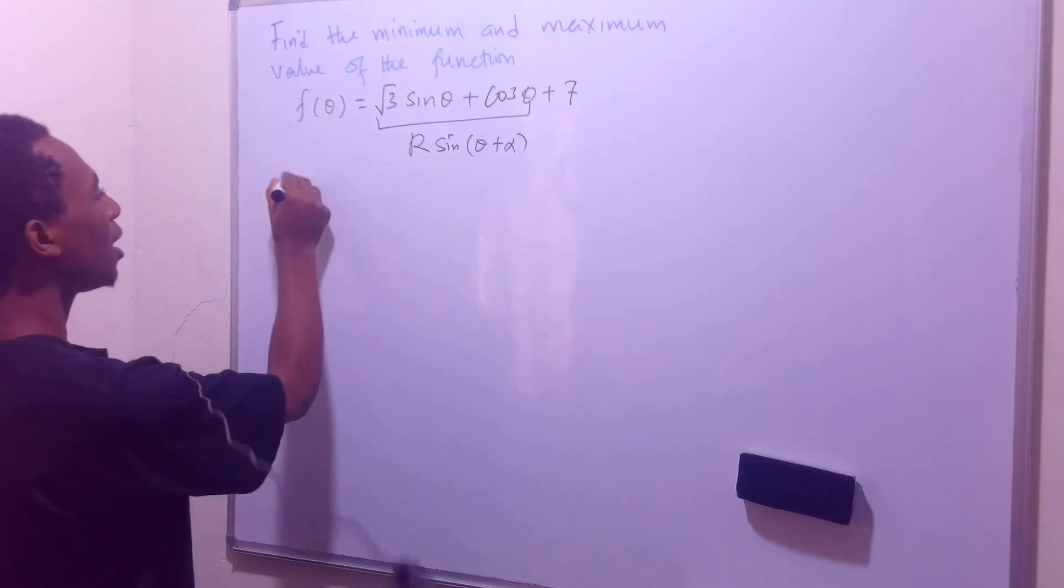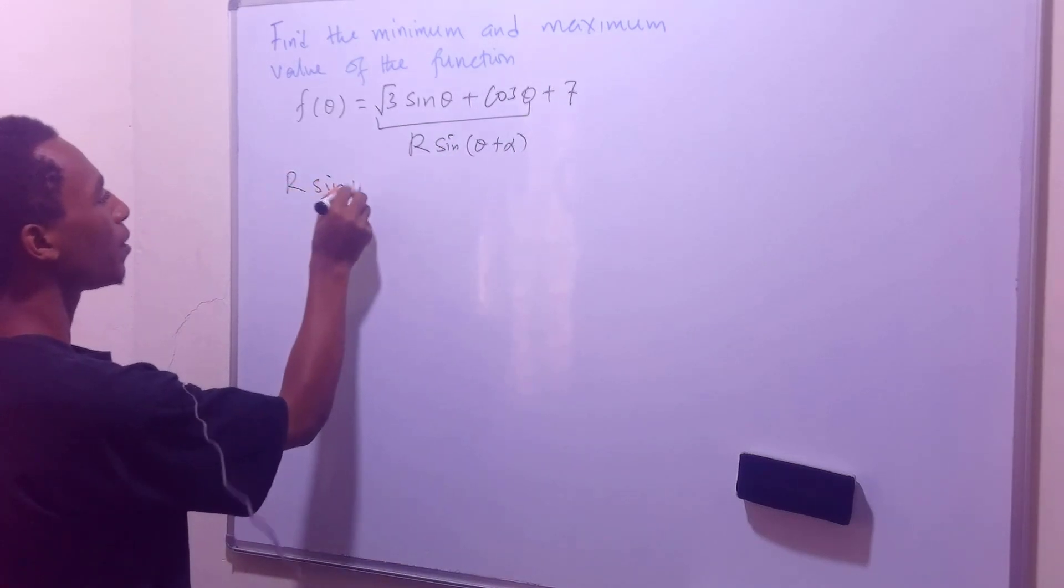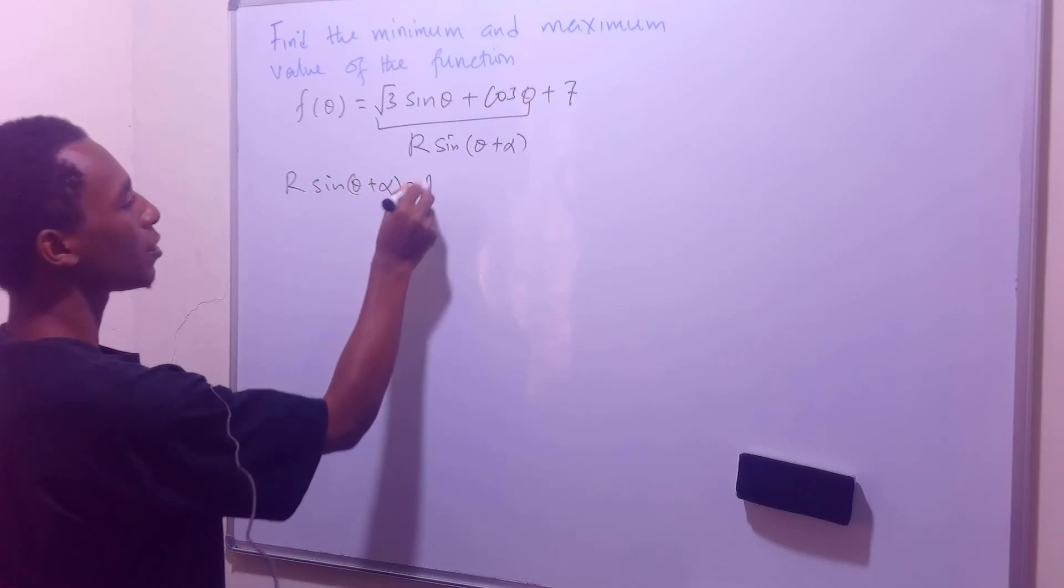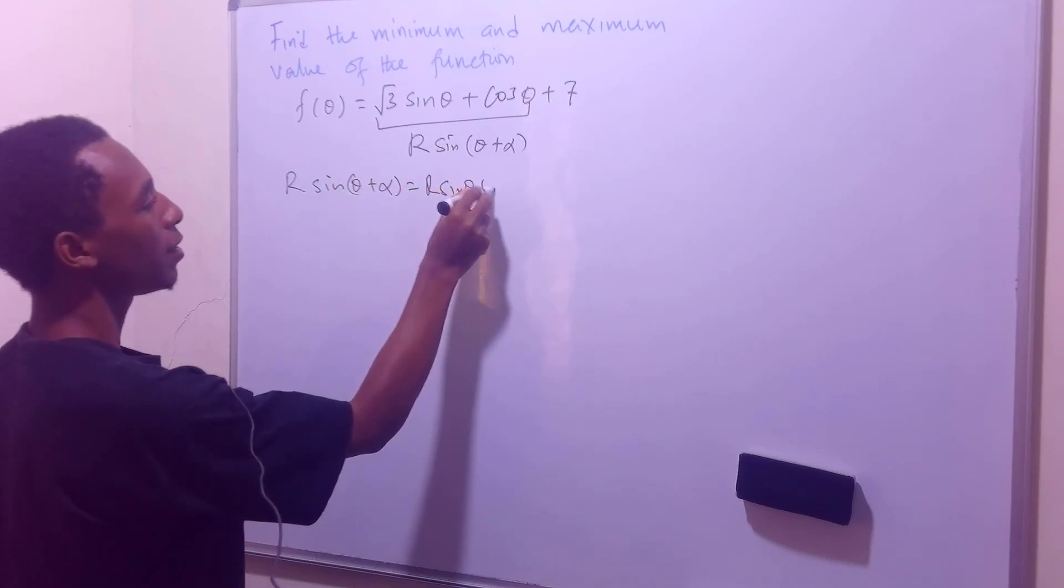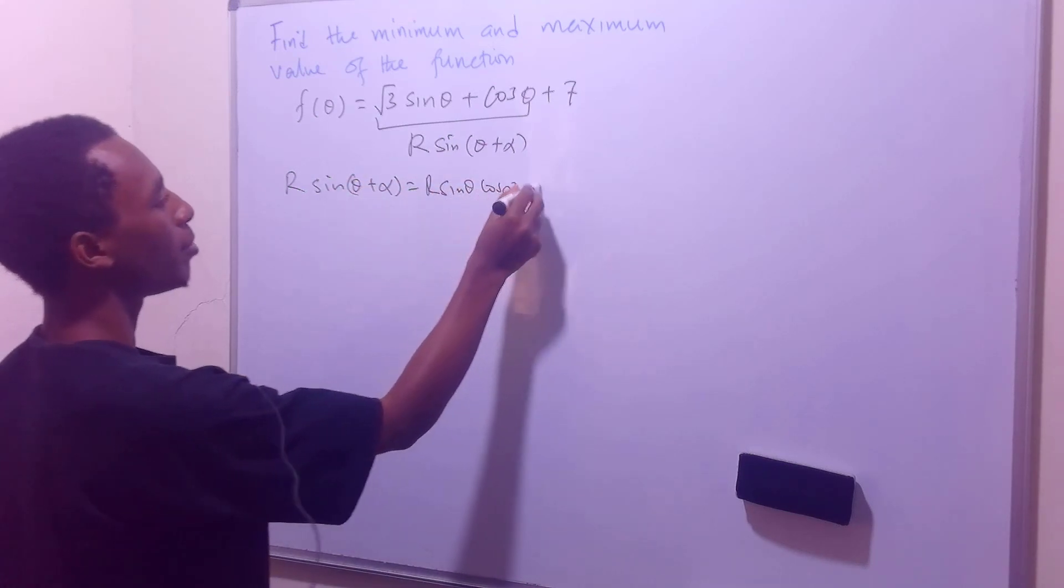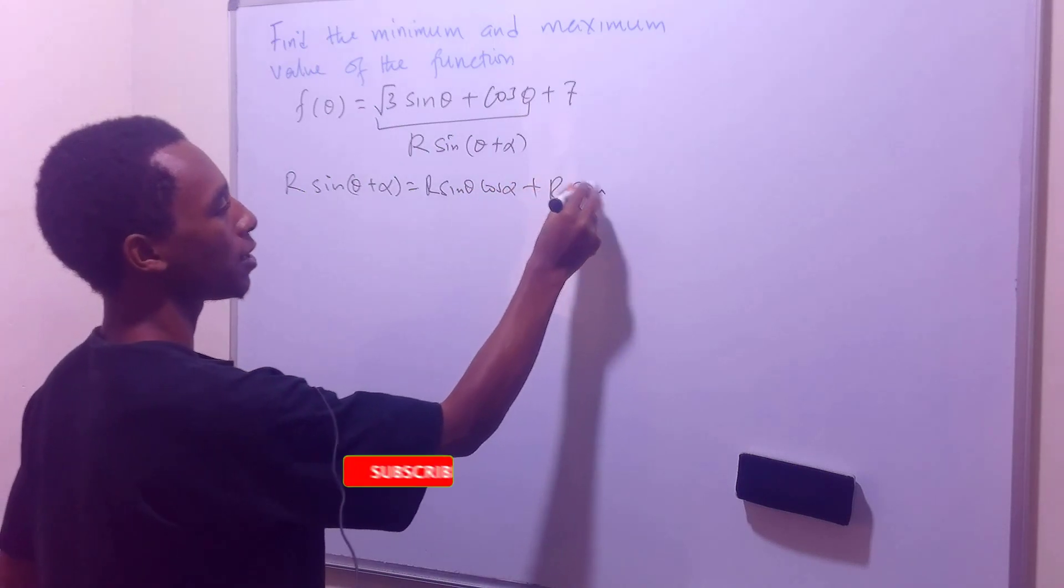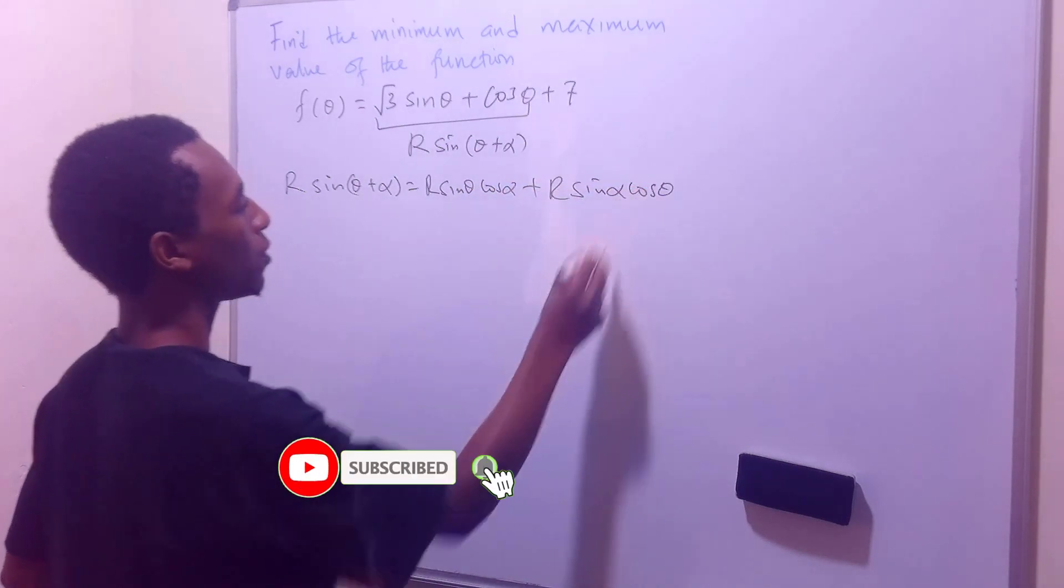So we know that r sin(θ + α) is actually r sin(θ) cos(α) + r sin(α) cos(θ).